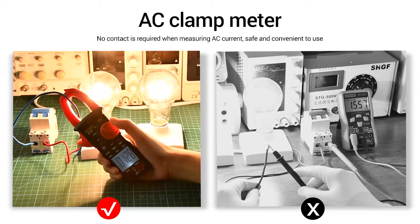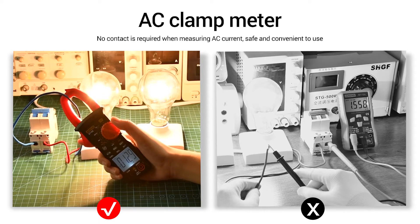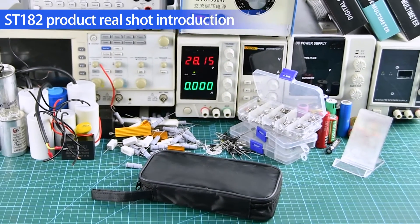The clamp meter does not need to touch when measuring AC current. Project real shot introduction.